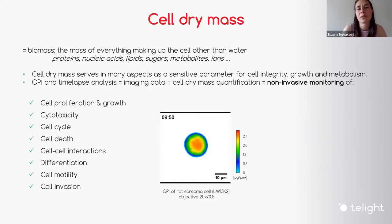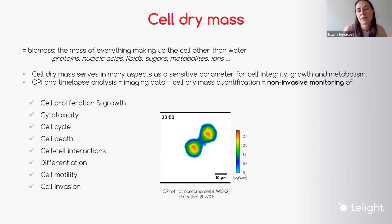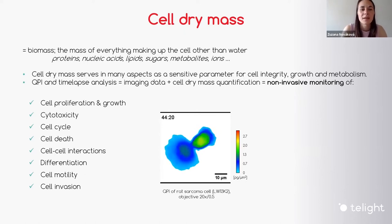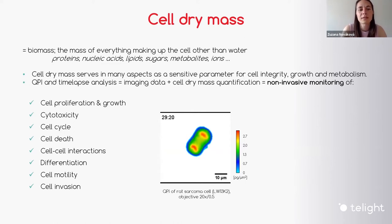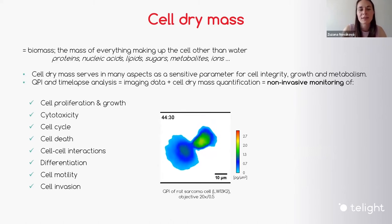Why is it good to study cell dry mass? Cell dry mass — you can imagine it as the mass of everything that makes up the cell content other than water. Cell dry mass serves in many aspects as a sensitive parameter for cell integrity, cell growth, and metabolism. In QPI technology, you can combine getting the imaging data — because it's a microscopic imaging technique — so you get the imaging data on your cells.